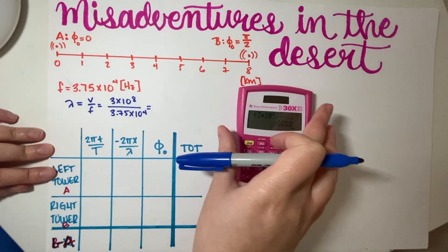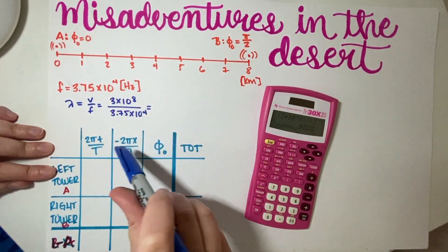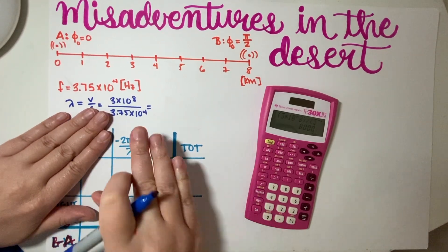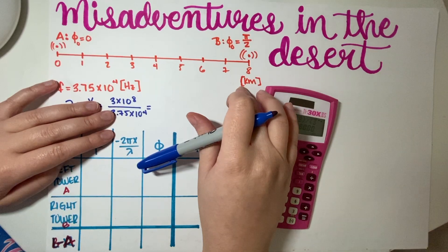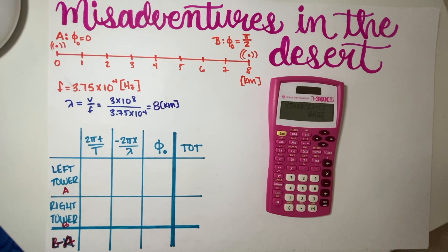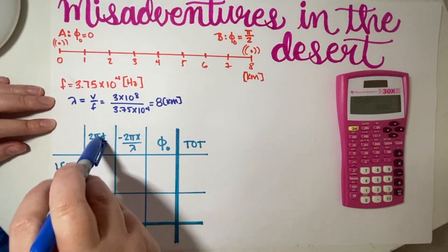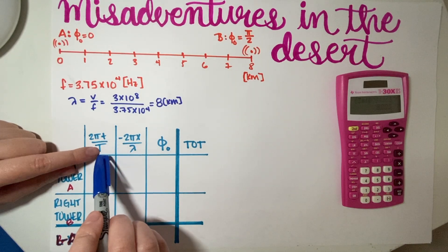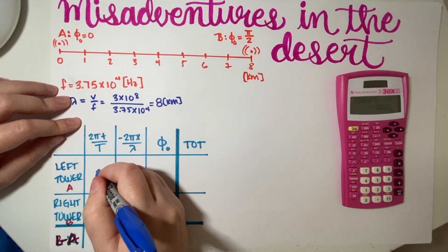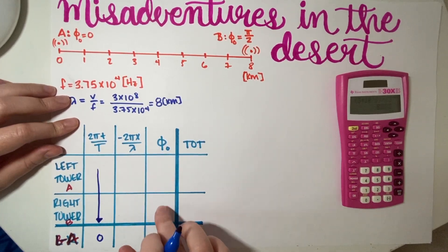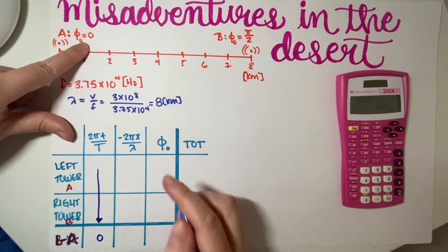So lambda is 8,000. Since everything here is in kilometers, I'll use kilometers throughout. As long as your units agree — when you divide x by lambda, if one is in kilometers the other needs to be kilometers too, and they'll just cancel out. So I have 8,000 meters which is eight kilometers. Now we start filling out the phase diagram. Since both radio signals have the exact same frequency and the same period, that part adds to zero.